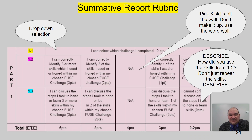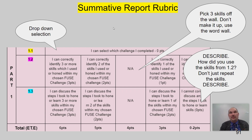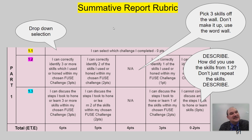There are five learning standards — you already saw them in the intro. Part one of your test is broken into five parts, 15 total questions: three, three, one, three, and five. Section 1.1: I can select the challenge I completed — it's a drop down, and the only option is spaghetti structures, so that one should be easy to get correct. Section 1.2: I can correctly identify three or more skills I used or honed within my FUSE challenge. Pick three skills off the word wall — don't make it up, use the word wall.